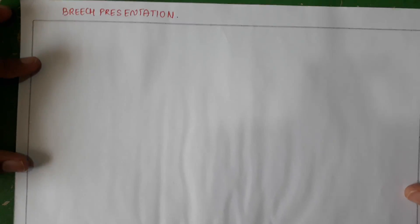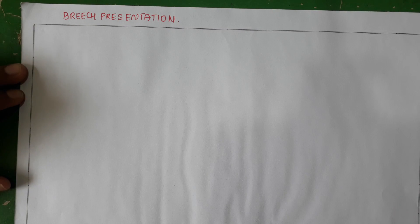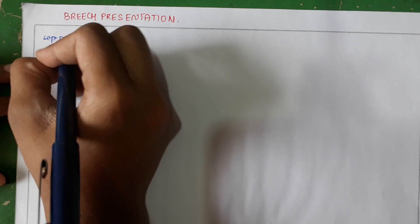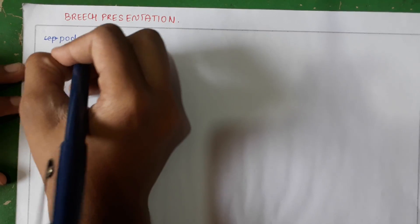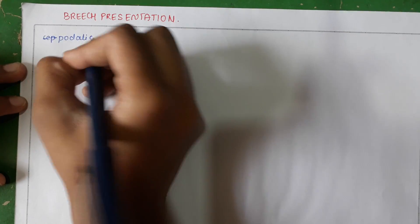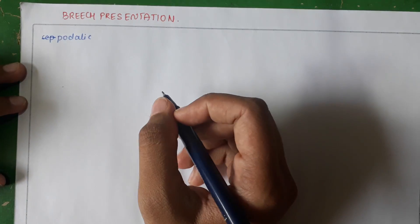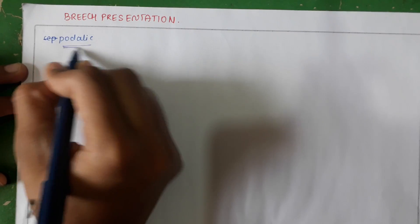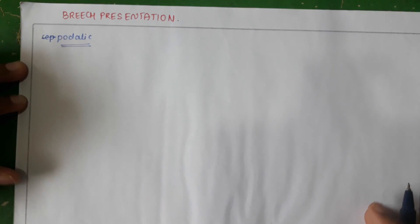The topic of discussion in today's video is Breech Presentation. Firstly, you should know what is Breech Presentation. It is a type of longitudinal lie where there is a podalic position present as the presenting part — that is, it is a podalic position.